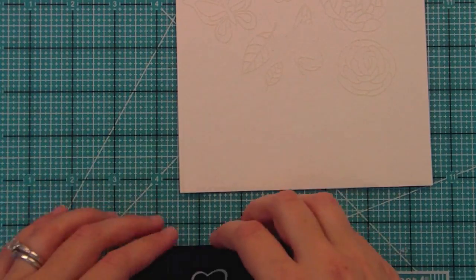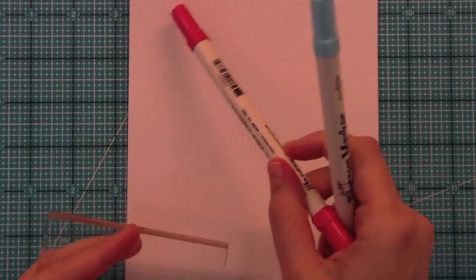You'll see right there that not every flower stamped perfectly because watercolor paper is a little bit bumpy but that's okay because it looks really cool with the markers.